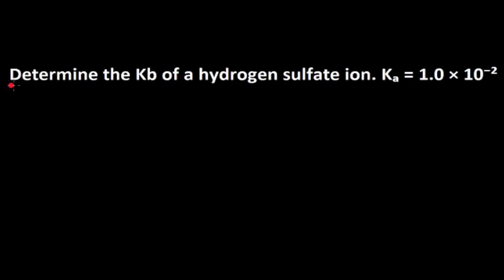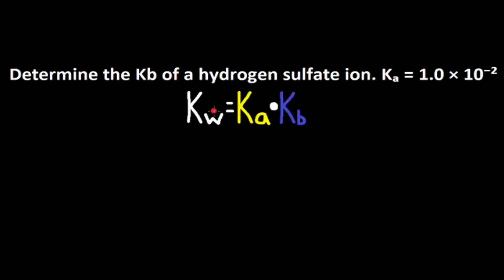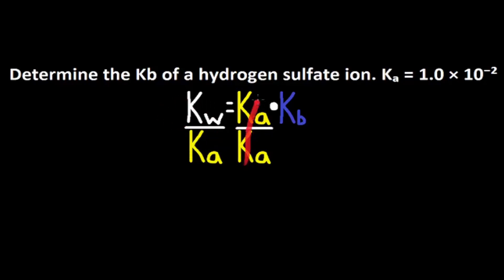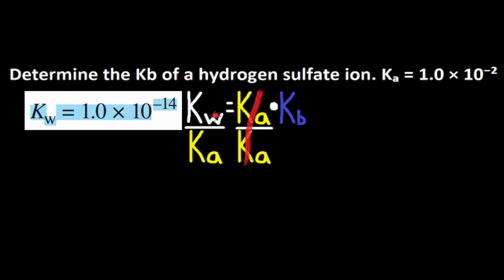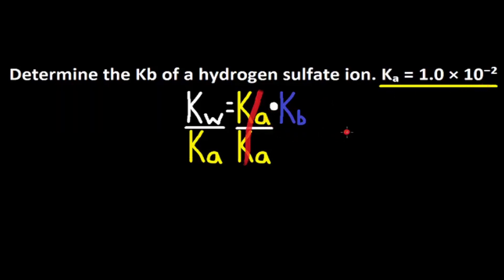Let's do this next problem. Determine the Kb of a hydrogen sulfate ion if Ka is equal to 1.0 times 10 to the negative 2. There are two ways to get Kb, but since we don't have pKb, we need to use Kw is equal to Ka multiplied by Kb. Isolating Kb by dividing both sides by Ka gives us Kw divided by Ka is equal to Kb. Kw, the water ionization constant from our data booklet, is 1.0 times 10 to the negative 14. Dividing by Ka, which is 1.0 times 10 to the negative 2, gives Kb is equal to 1.0 times 10 to the negative 12.